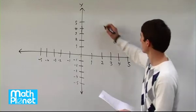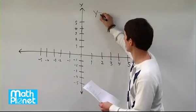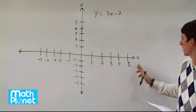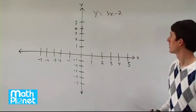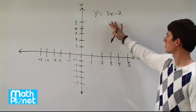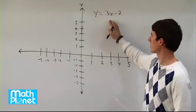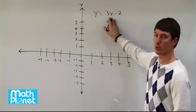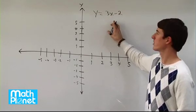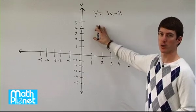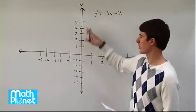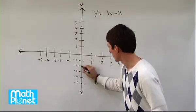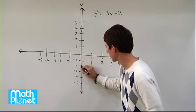Here we have a linear function written as y equals 3x minus 2. So we have our coordinate plane here, x and y. How I think you should do this is start with the most simple point. This number here is referred to as our y-intercept. So if you ignore the x term, or in other words if you plug in zero for x, what value do you get for y? It's called the y-intercept where it crosses the y-axis. The y-intercept is negative 2, so we know that we have one point at negative 2.